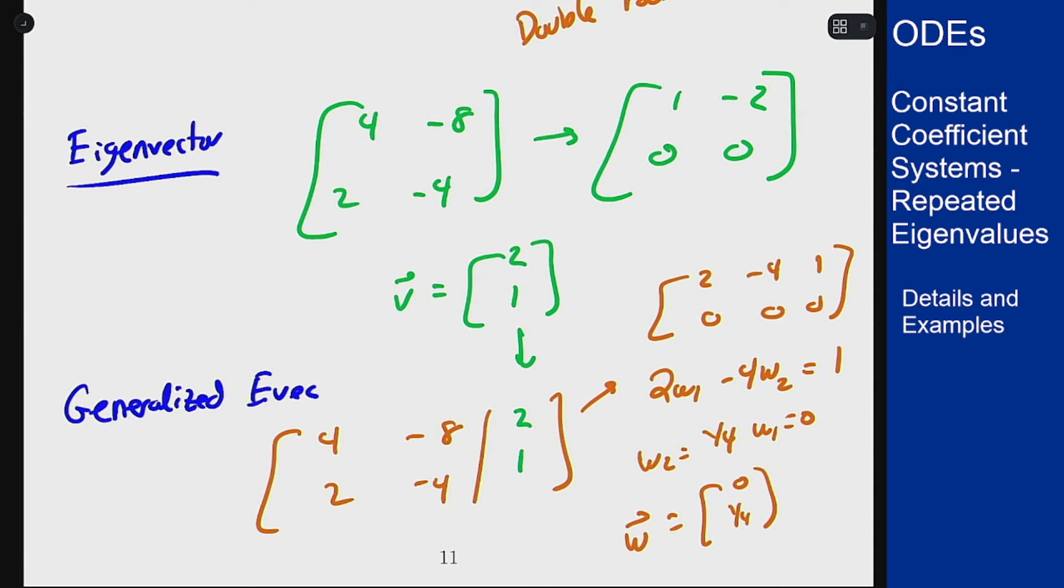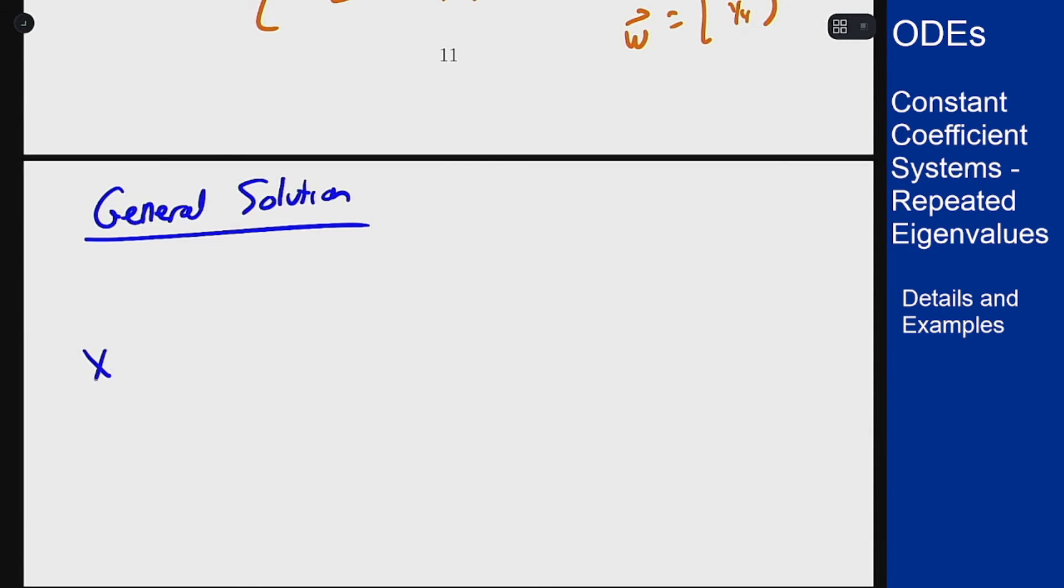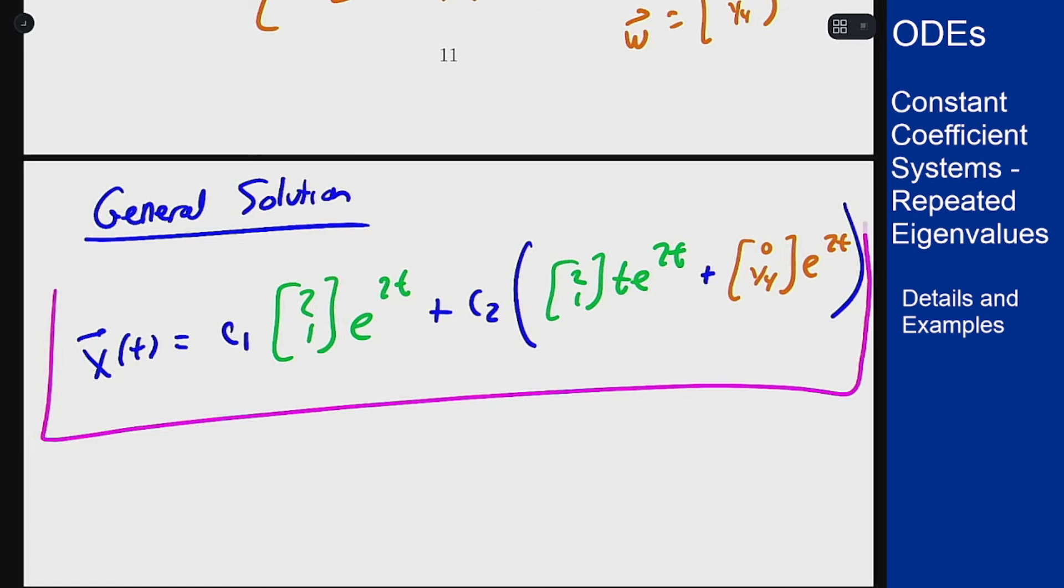Now that I have it, I can write the general solution, and I get x of t equals c1 times my eigenvector, which was [2; 1] e to the 2t, and then plus c2 times the second solution, which is the eigenvector times t e to the 2t, plus my generalized eigenvector [0; 1/4] times e to the 2t. And that would be a general solution for this problem.